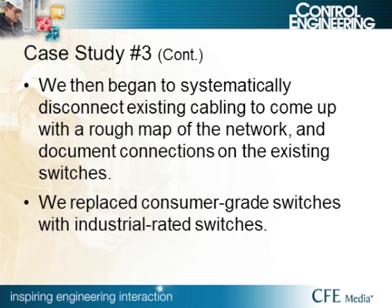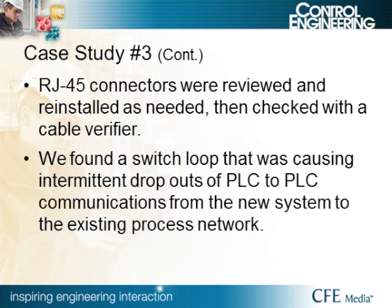Once the plant was down for installation, we traced out connections as much as possible and found switches buried up in panels — including an unmanaged switch hidden in a corner panel that nobody knew about. We also found cabling issues: bad connectors, individual conductors cut during sheath removal, and cables that had been pushed against something over the years, developing a crimp. We then systematically disconnected the existing cabling to map the network and document all connections. We replaced consumer-grade switches with industrial-rated switches. We also found switch loops causing intermittent PLC-to-PLC communication dropouts — because the original switches were unmanaged, spanning tree protocol was not enabled.